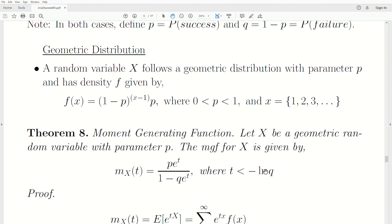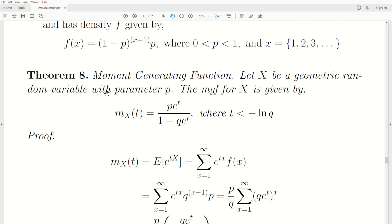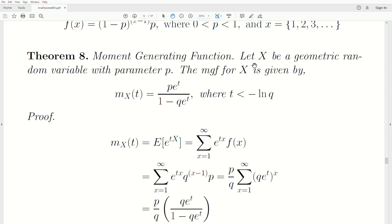The moment generating function for a geometric random variable: let X be a geometric random variable with parameter P. Remember, P is the probability of a success. The moment generating function for X is given by this: MX of T is this fraction, P times E to the T, over one minus Q E to the T.